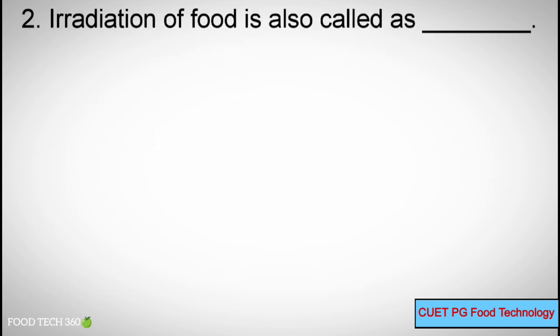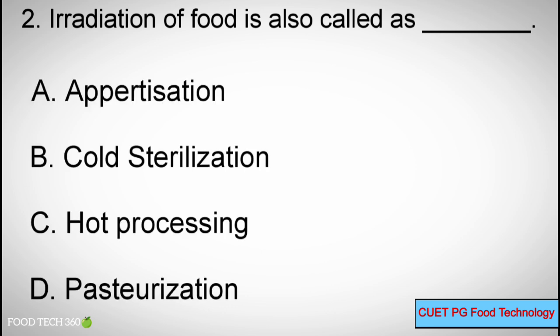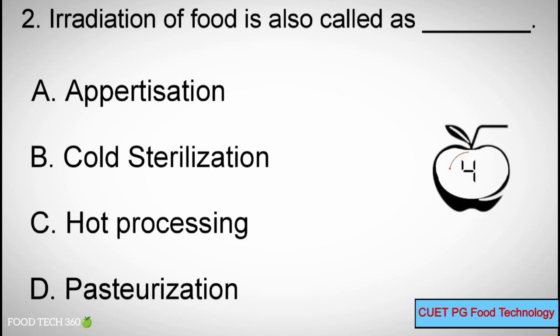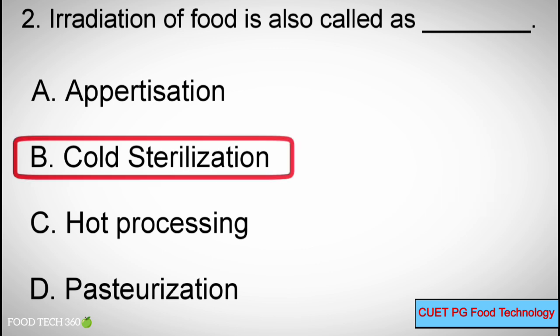Question number 2. Irradiation of food is also called as dash. Option A: Apertization, B: Cold sterilization, C: Hot processing, D: Pasteurization. Correct answer: B, Cold sterilization.